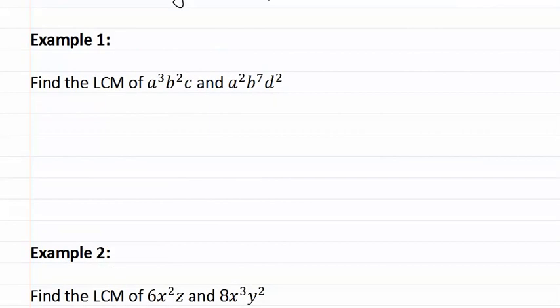Example one: Find the least common multiple of a³b²c and a²b⁷d². As you can see, there are no numbers involved in this question, so we can go straight to using all the unique factors and assigning the highest exponent.